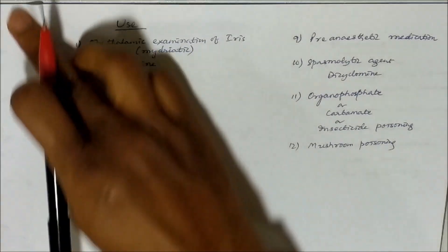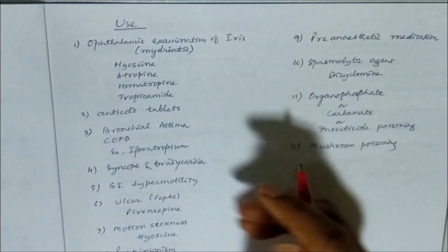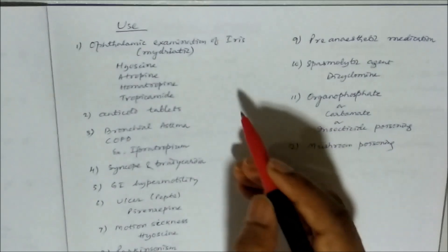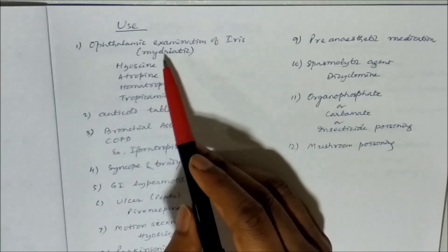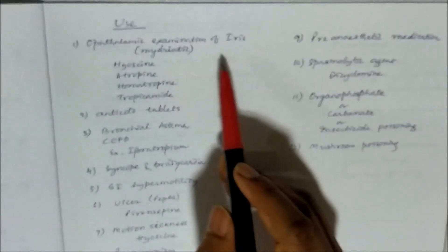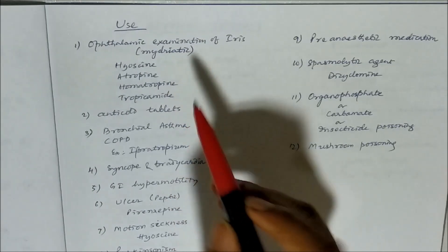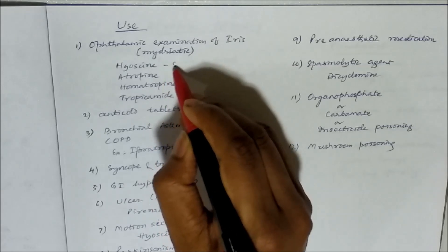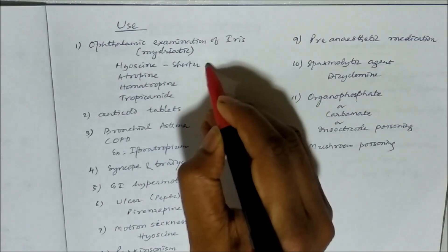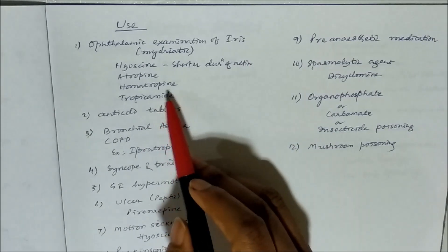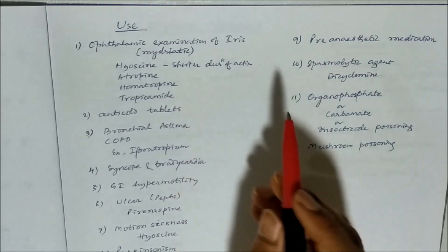How are they used? What are the uses of parasympatholytics? We can use them for ophthalmic examination. If you remember, adrenaline can be used as a sympathomimetic, and similar actions with parasympatholytics. Hyoscine is preferred because of shorter duration of action, and other drugs like atropine, homatropine, tropicamide also can be used.